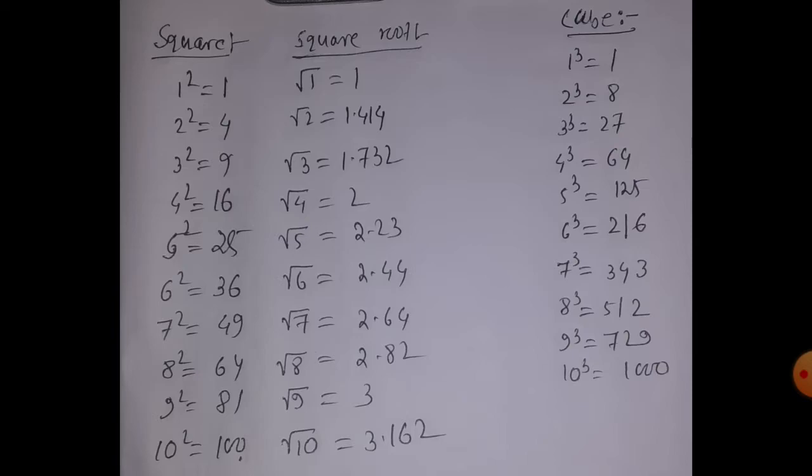Square root of 1 is 1, square root of 2 is 1.414, square root of 3 is 1.732, square root of 4 is 2, square root of 5 is 2.23.